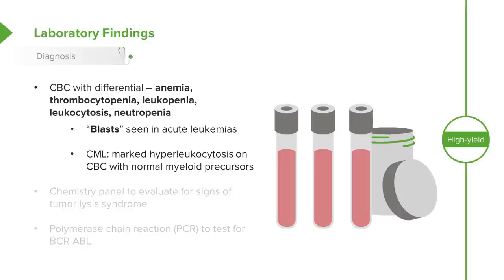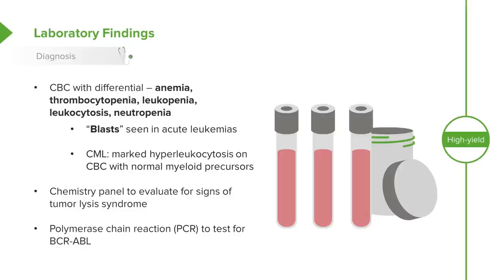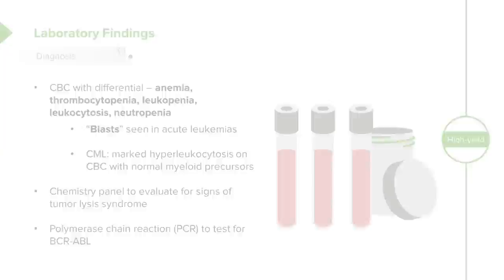In CML, we sometimes see very marked hyperleukocytosis with white counts in the 50 to 100 range, and we often see normal myeloid precursors on those CBCs. In patients where we suspect leukemia, we will also check a chemistry panel to look for signs of tumor lysis syndrome, such as high potassium or high phosphate. For CML specifically, we can look for the BCR-ABL gene, though that's usually done a bit later on.